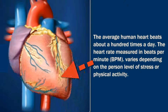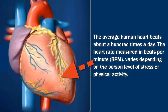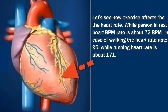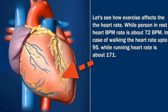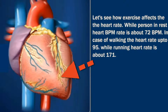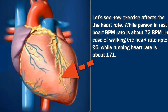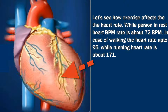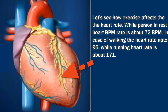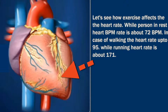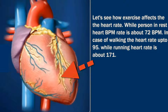When a person is at rest, you can see the heart beating rate is normal and the BPM rate is up to 72. When the person starts walking, the heart beating rate increases up to 95 BPM. After that, when a person does heavy physical activity like running, the heartbeat increases up to 171 BPM.